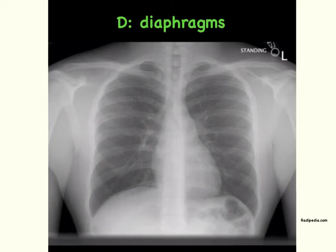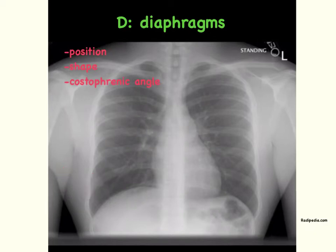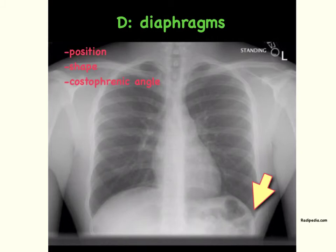D is for diaphragm. When evaluating the diaphragm, you need to evaluate the position — the right is usually slightly higher than the left due to the liver — and the shape. The diaphragms will be flat in a hyperinflated state, such as in an asthmatic or an adult with COPD. It's also important to evaluate the costophrenic angles, which should be sharp. A blunted costophrenic angle gives you concern for a pleural effusion.